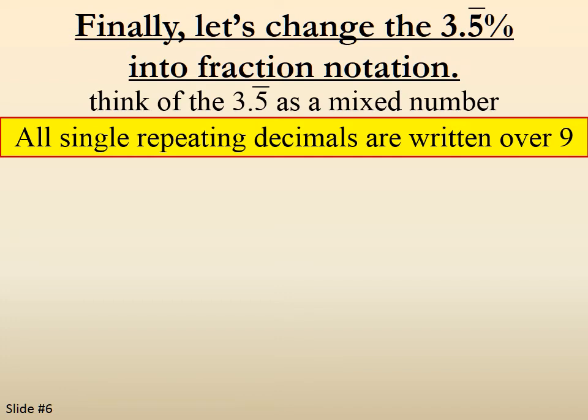Well, all single repeating decimals are written over 9. So you would say 3 and 5 ninths, because if you take 5 and divide it by 9, you get 0.555... and so on.